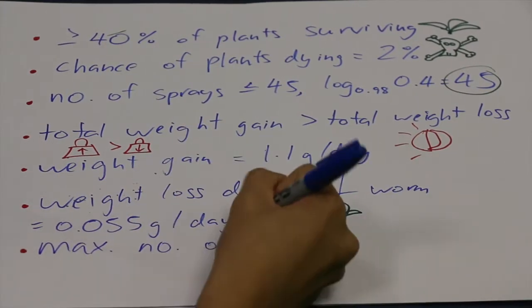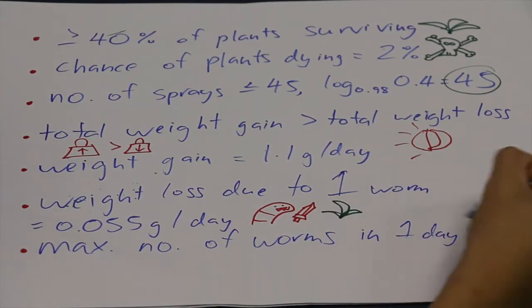The maximum number of worms that can be present in a day for there to be no net change in weight is 20 worms.